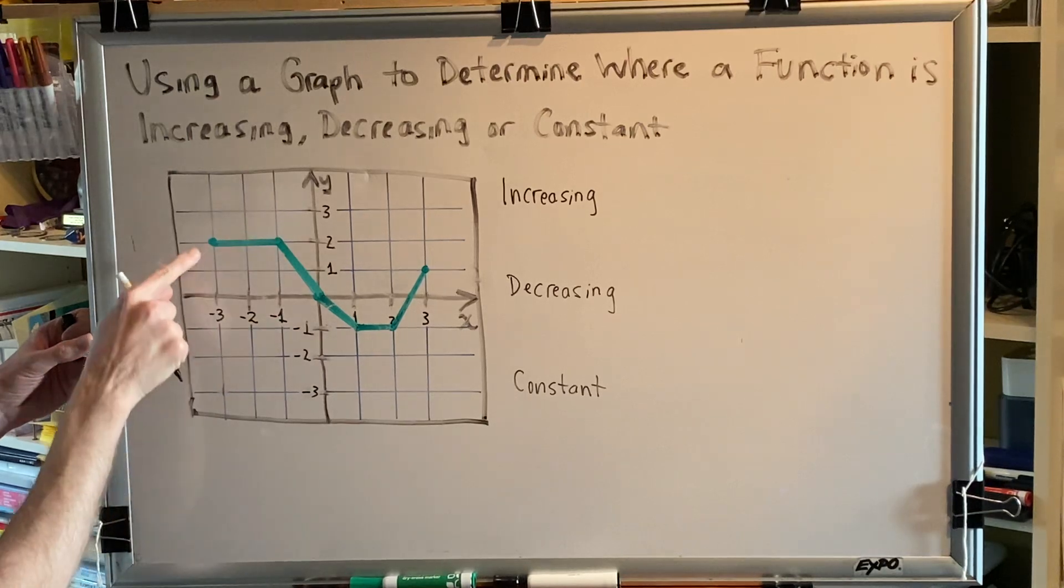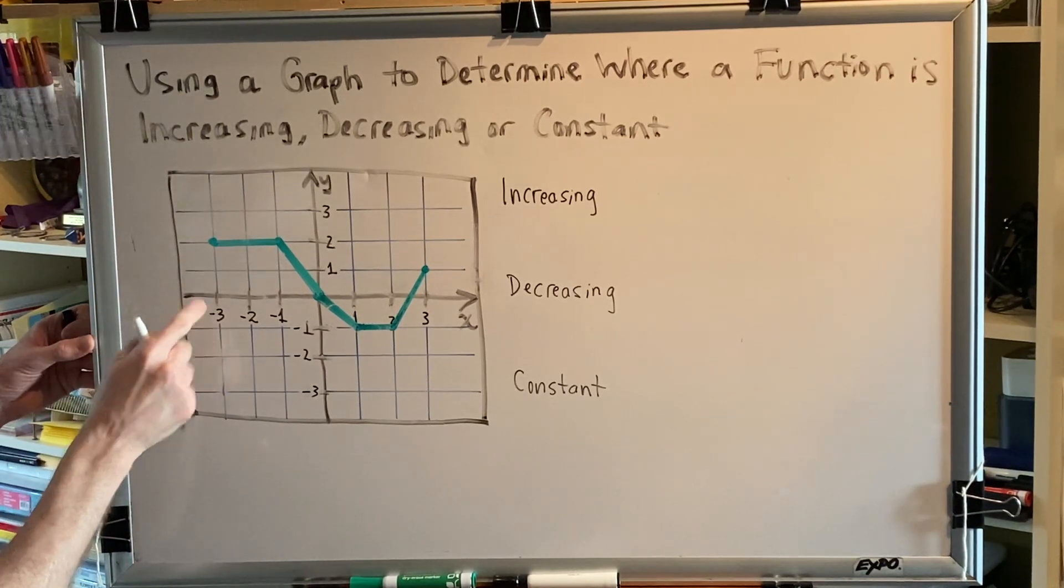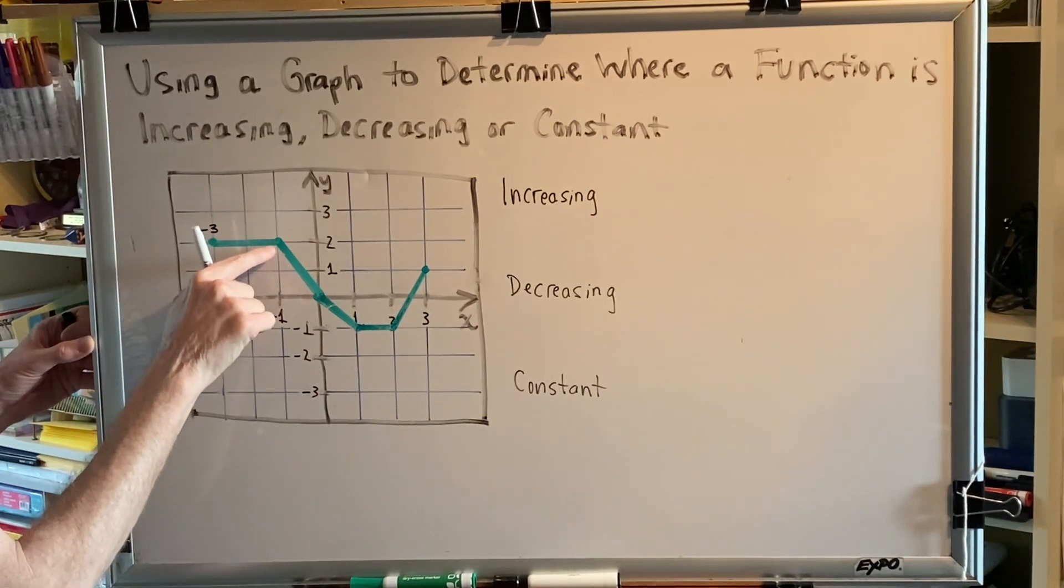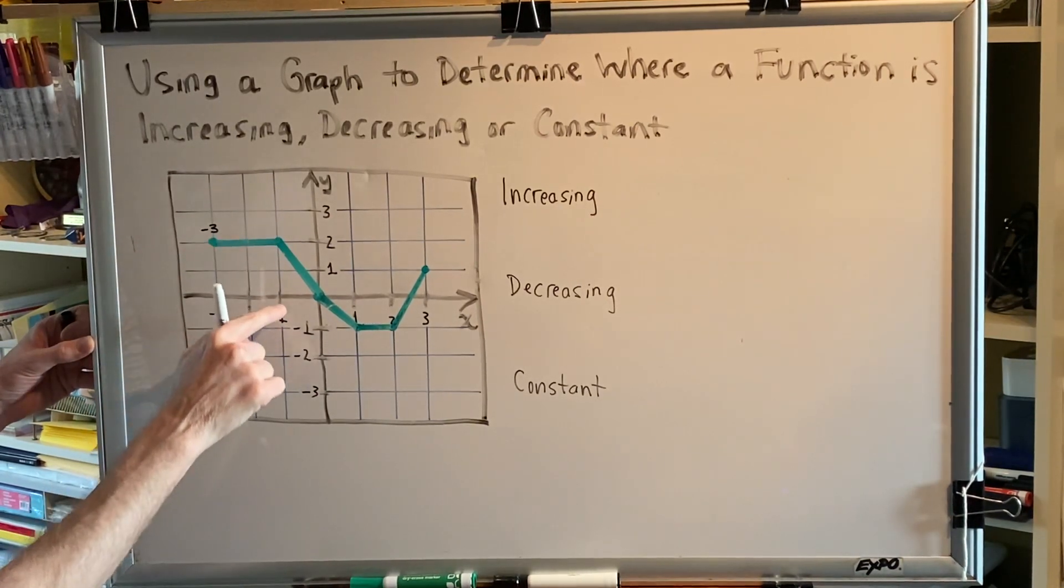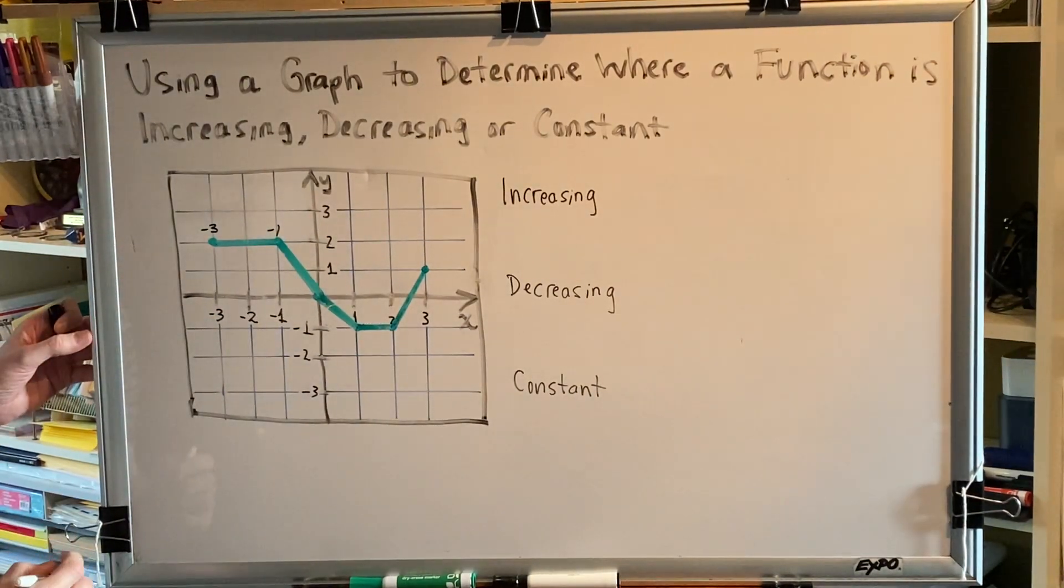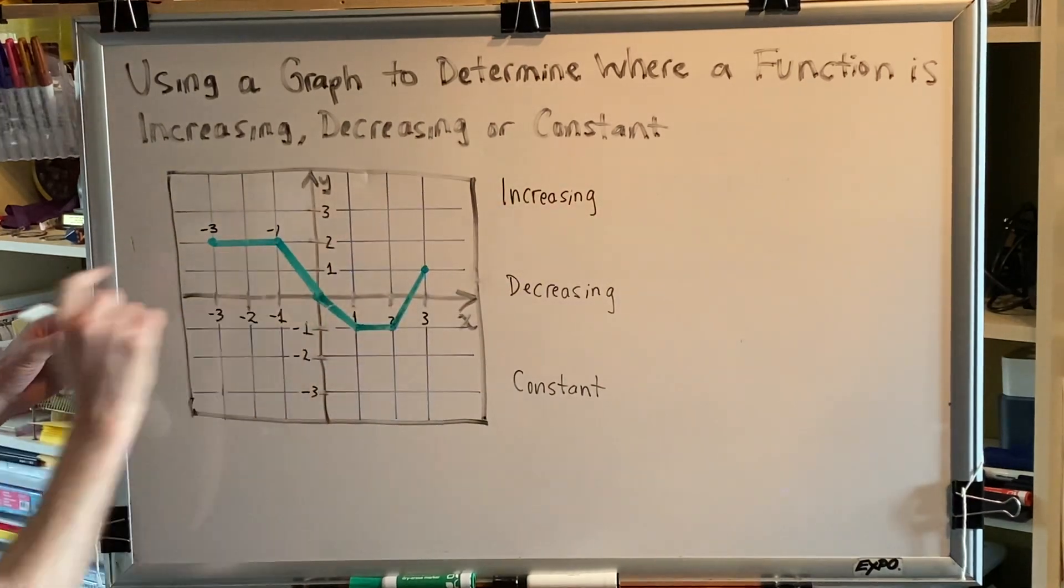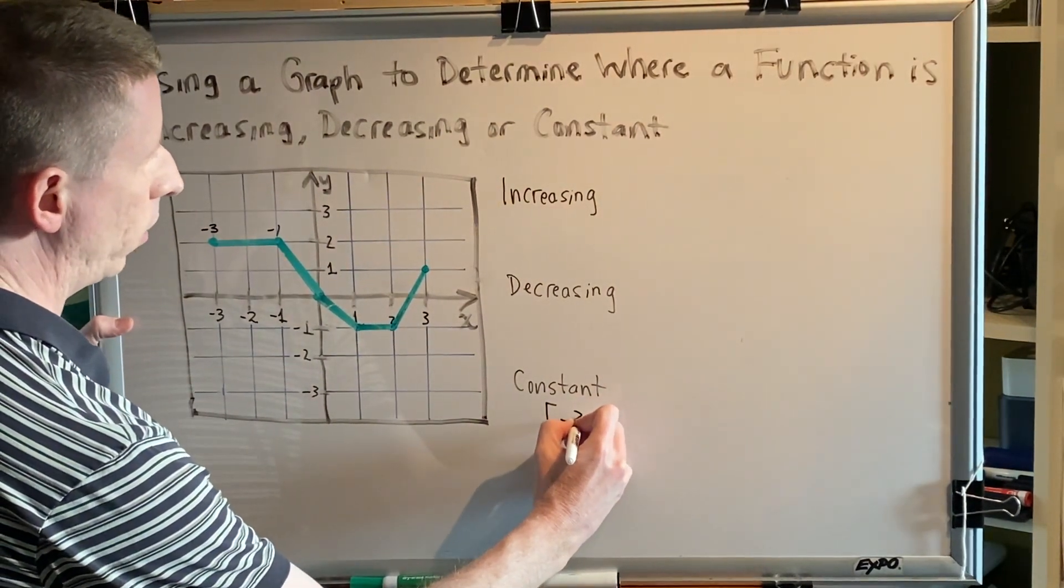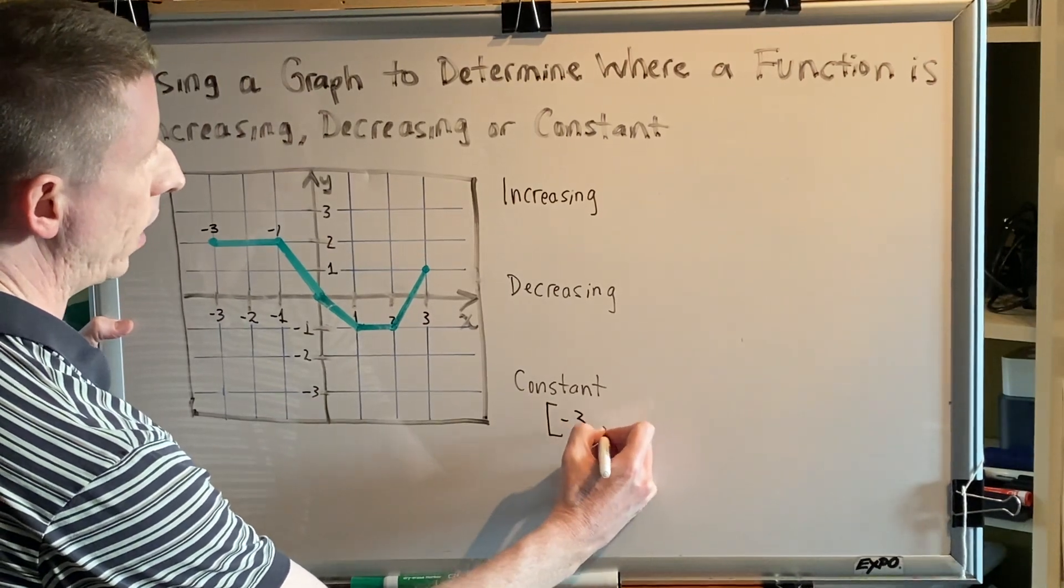We know that the x-coordinate of our starting point is negative three. We travel flat, constant, until this point which has an x-coordinate of negative one. This gives us our first interval. We are constant from negative three to negative one. We write this as a closed interval, so bracket negative three comma negative one bracket.